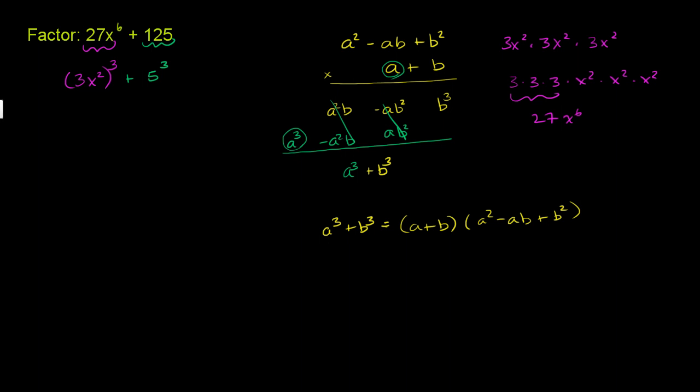So now we know that we have this pattern. So we can just use this. We have the sum of cubes. So just by using this pattern right over here, that means that we can factor it as 3x squared, that's our a. This right here is our a. This right here is our b. So it's going to be a plus b, 3x squared plus 5 times a squared.